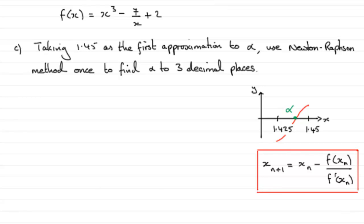So if we take our first approximation, let's call it x1, then as 1.45, using this particular formula, we need to first of all establish what f dash of x is.